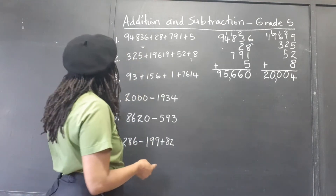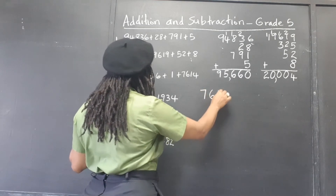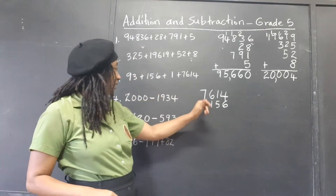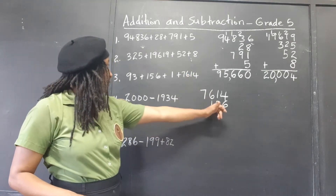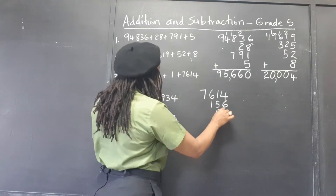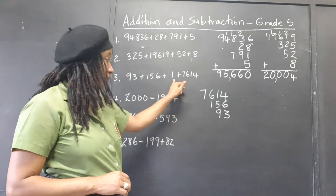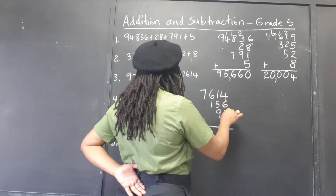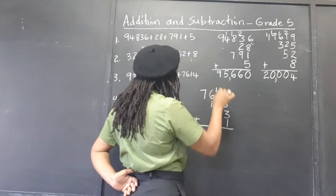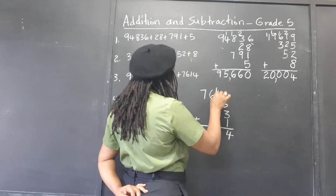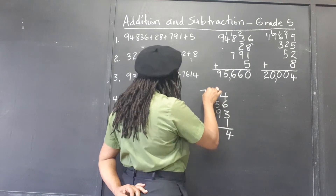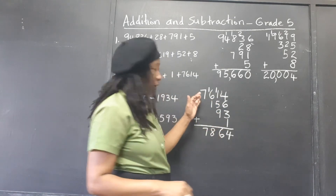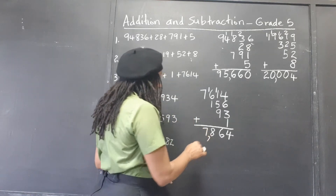We have one more addition. We have 7,614 plus 156 plus 93 plus 1. Notice where I line them up: 156 is one hundred, so it goes under the six hundred; five tens, six ones. We have 93, which is nine tens, three ones. And we have just one unit here — it goes under the units. So: 6 and 4 is 10, and 3 is 13, and 1 is 14 ones, from which we get one ten and four ones. Nine and five is 14, 15, 16 tens — one hundred and six tens remain. Six and one is 7, and 1 is 8. Nothing to add to the seven thousand, so that's 7,864.